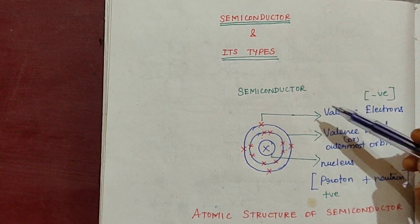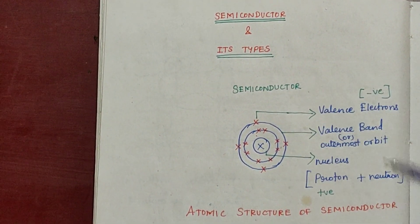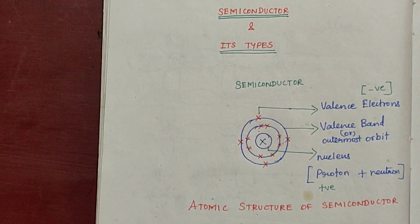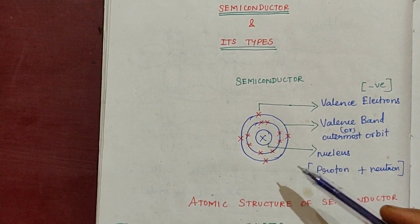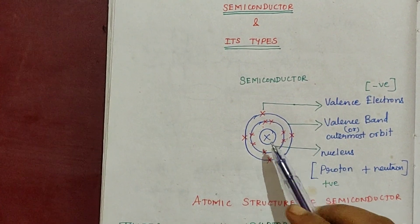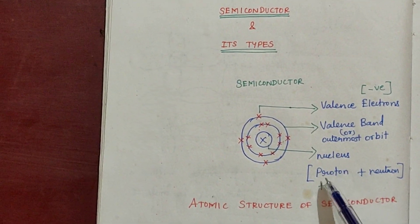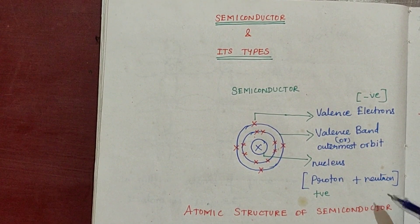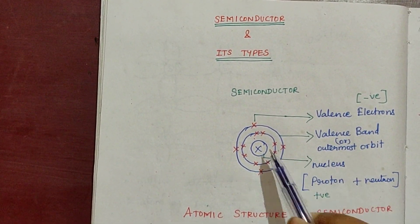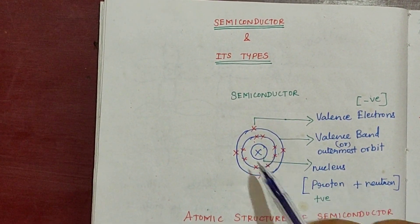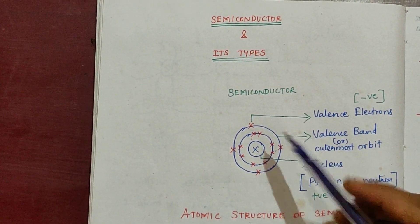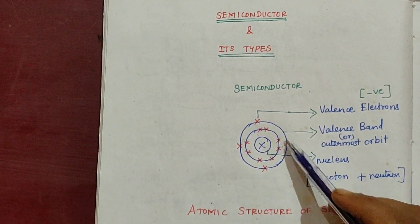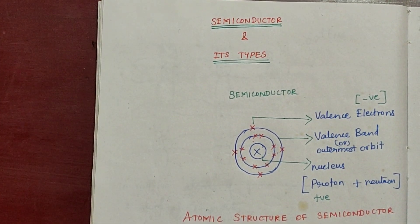If you recall, semiconductors are also a kind of material. There are billions of atoms. In the atom structure, this is the center portion — the nucleus. There are protons and neutrons. Protons are positively charged; neutrons have no charge. Electrons revolve around the nucleus, and the outermost part is the valence band. The electrons here are called valence electrons.